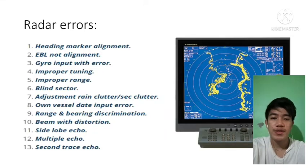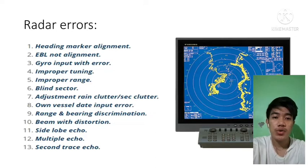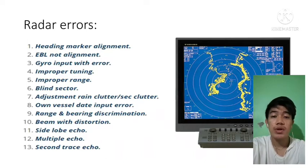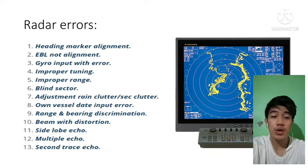Next is the range and bearing discrimination. In range discrimination, two small targets on the same bearing with a slight range difference may be shown as one target. In bearing discrimination, two small targets on the same range with a slight bearing difference may also be shown as one target.